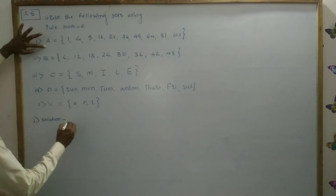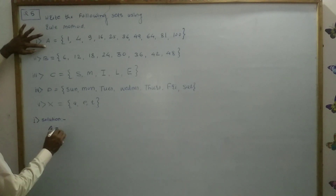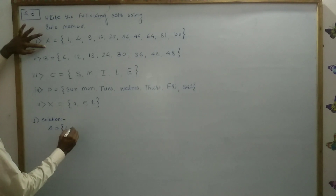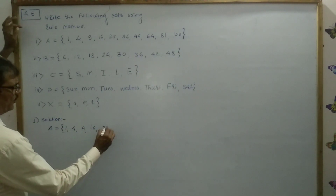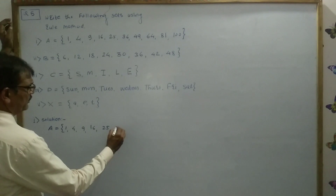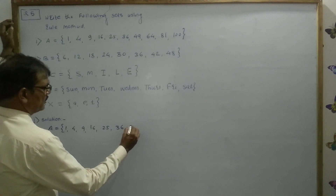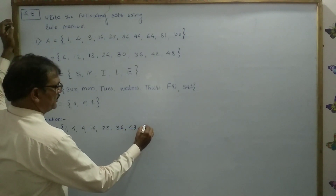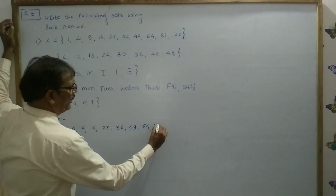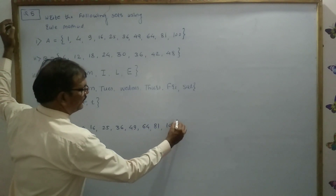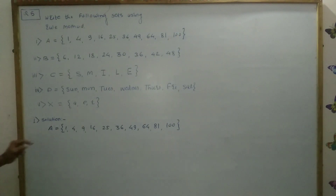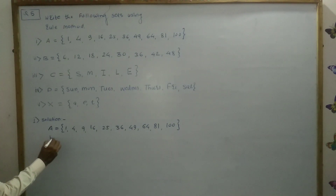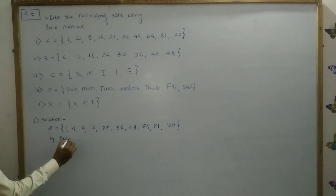First: E is equal to 1, 4, 9, 16, 25, 36, 49, 64, 81, and 100. So this is the number of elements in set E. Now here by rule method, therefore take any variable, suppose X, such that X is equal to these numbers.